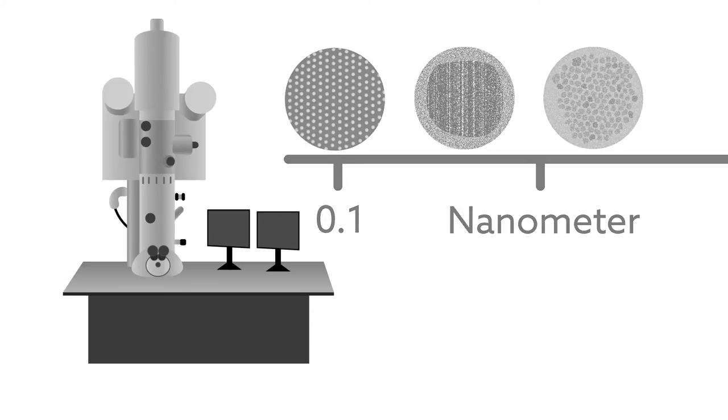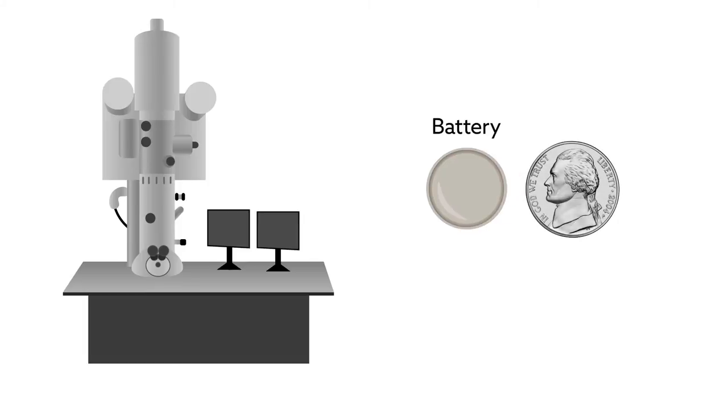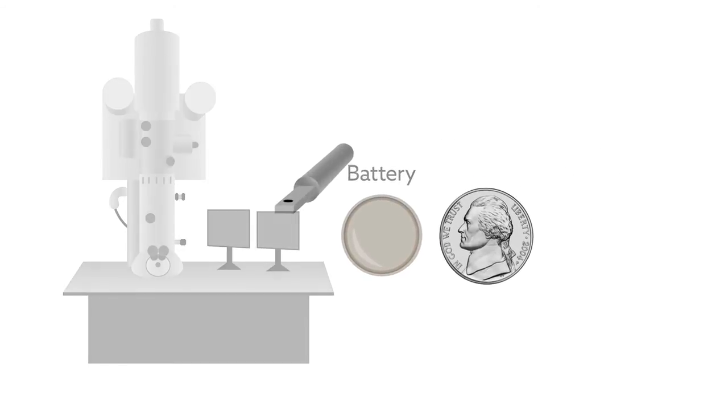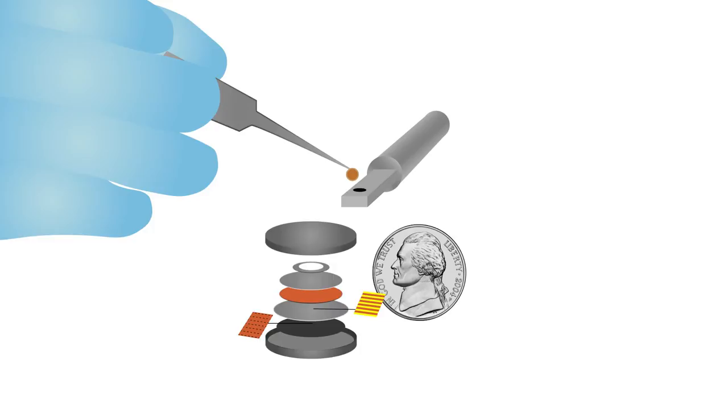But it takes more than high resolution to catch a glimpse of what goes on inside of a battery while it is operating. One of the biggest problems is size. Even the smallest coin-shaped batteries found in cameras and toys are too big to view under an electron microscope. And even if they could fit, slicing them open would necessarily compromise their function.